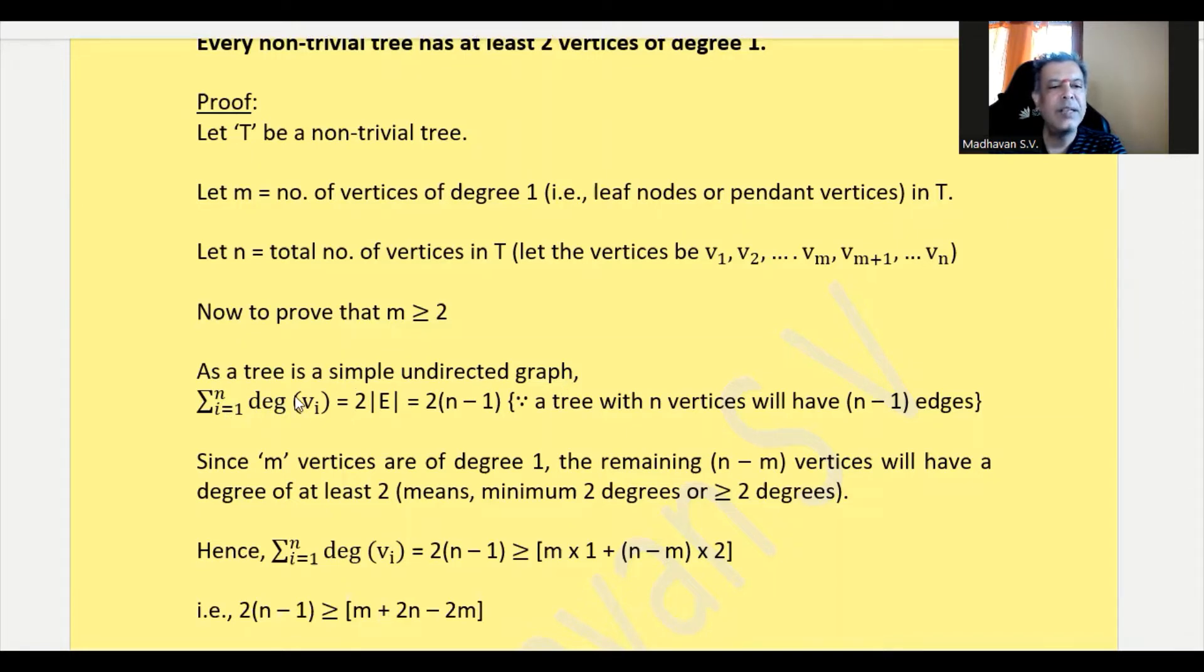We know the number of edges will be n minus 1, so therefore it becomes 2 times (n - 1), since a tree with n vertices will have n - 1 edges, which we had already seen in our previous video.